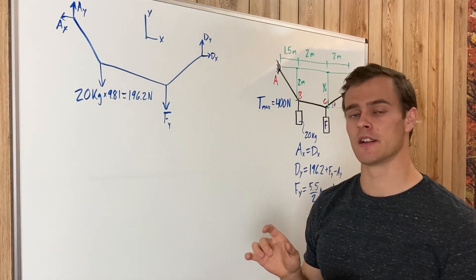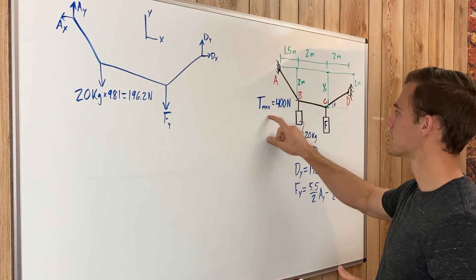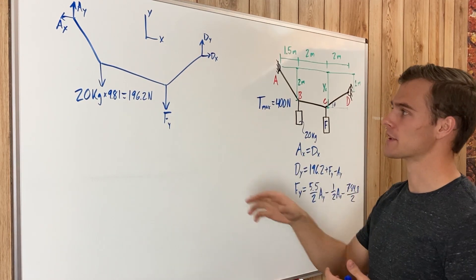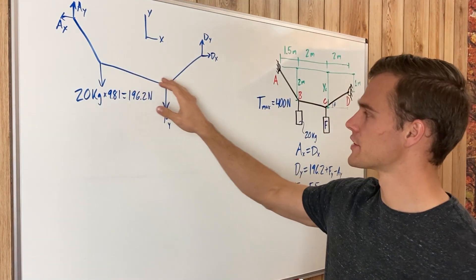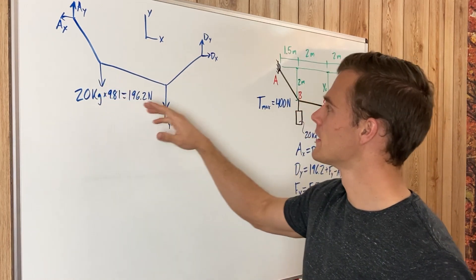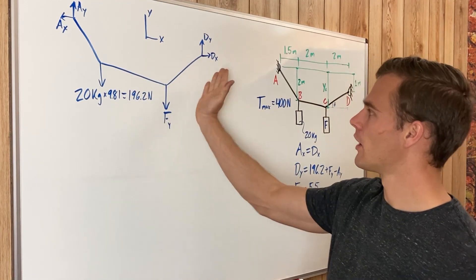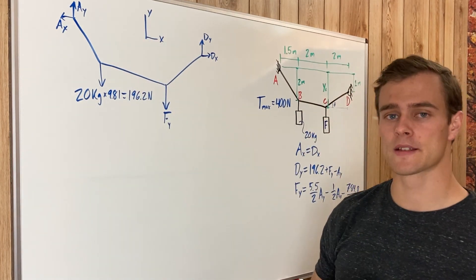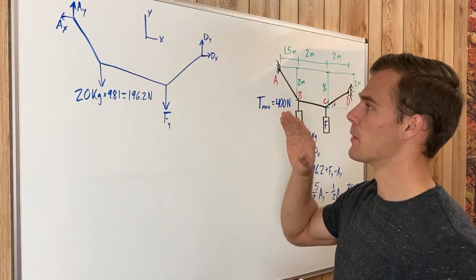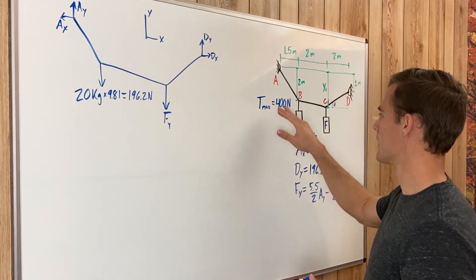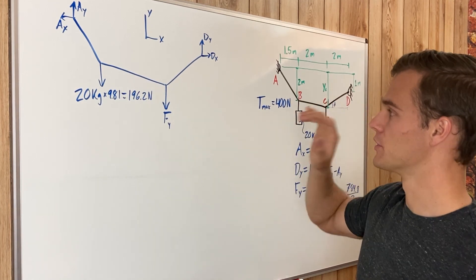Because the horizontal tension is the same throughout the cable, the segment with the maximum tension will be the one with the greatest vertical tension component. The horizontal component stays constant, but each segment has a different slope, so the one with the greatest slope will have the greatest vertical tension and thus the maximum total tension of 400 newtons.